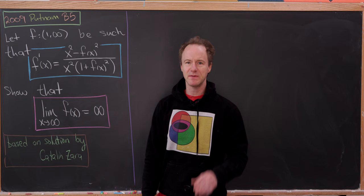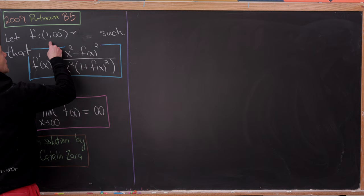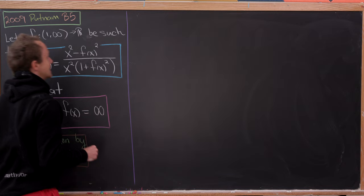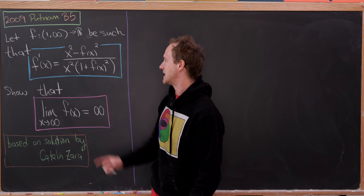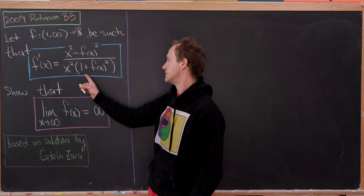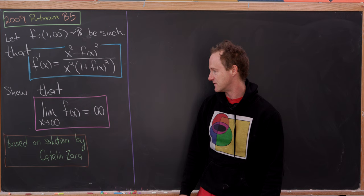Let's suppose we have a function f which goes from the open interval (1, ∞) to the real numbers, and it satisfies the differential equation: f prime equals x squared minus f(x) squared, all over x squared times (1 + f(x) squared). Our goal is to show that the limit as x goes to infinity of f(x) is in fact infinity.